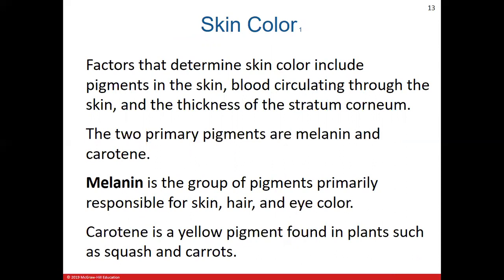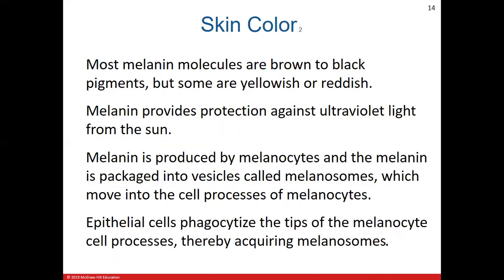In the next section we'll talk about what contributes to skin color. There are a couple of main factors: mainly pigments, but also the blood that circulates through the skin, and the thickness of the outer stratum corneum layer. When we talk about pigments, we mainly focus on two: melanin, which plays the primary role in determining skin tone and color in the skin and eyes, and carotene — a yellowish-orange pigment that gives vegetables like squash and carrots their color and also contributes to skin tone.